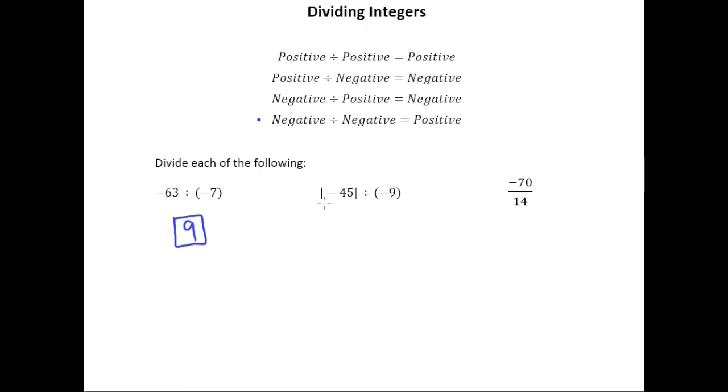This example here we need to be careful. Whenever you see those absolute value bars be very careful. You always need to actually take the absolute value before you try and decide what the sign of your answer is going to be. So the first thing we'll do is note that the absolute value of negative 45 is 45.